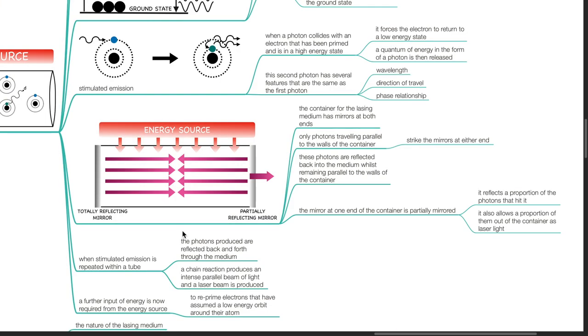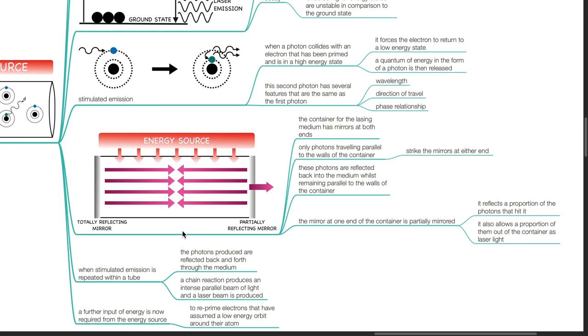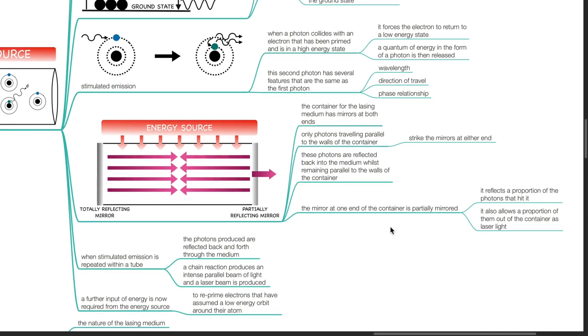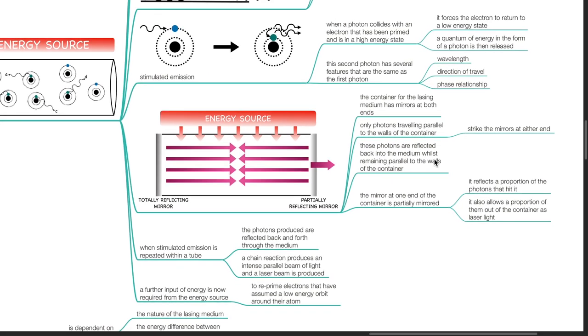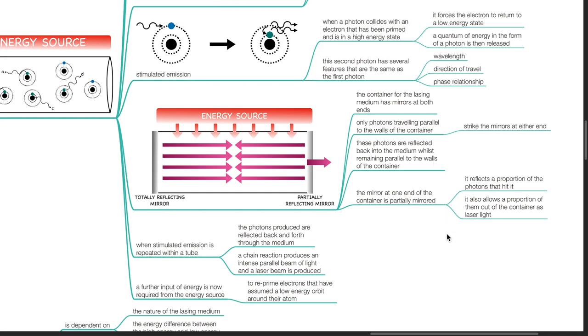The container for the lasing medium has mirrors at both ends. Only photons travelling parallel to the walls of the container strike the mirrors at either end. These photons are reflected back into the medium, while remaining parallel to the walls of the container. The mirror at one end of the container is partially mirrored. It reflects a proportion of the photons that hit it. It also allows a proportion of them out of the container as laser light.